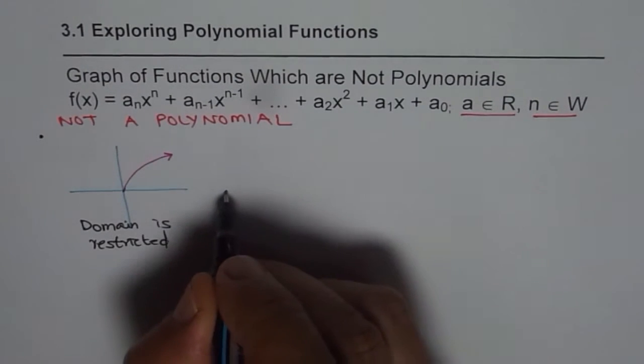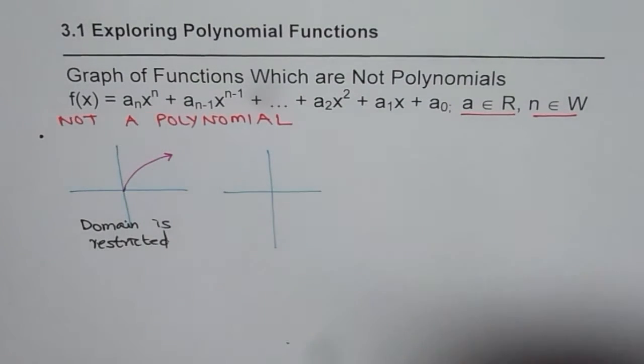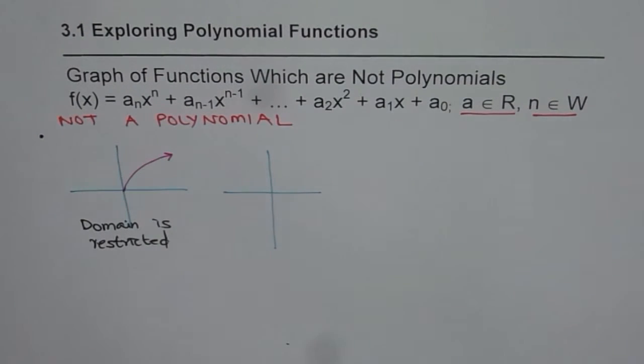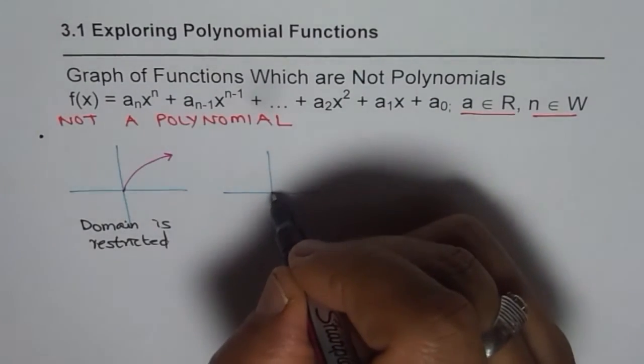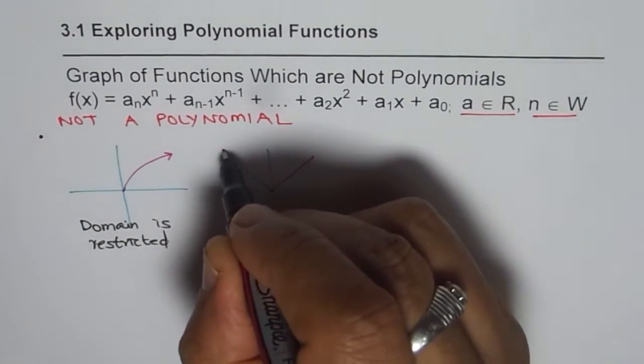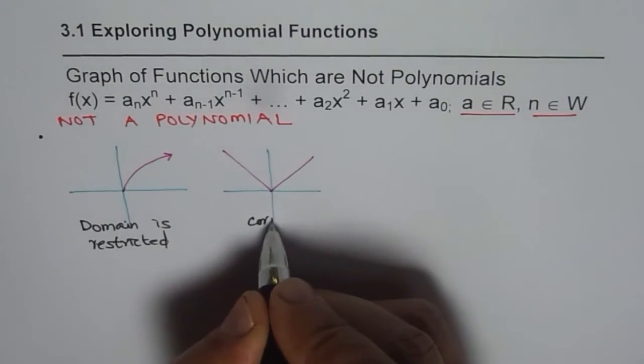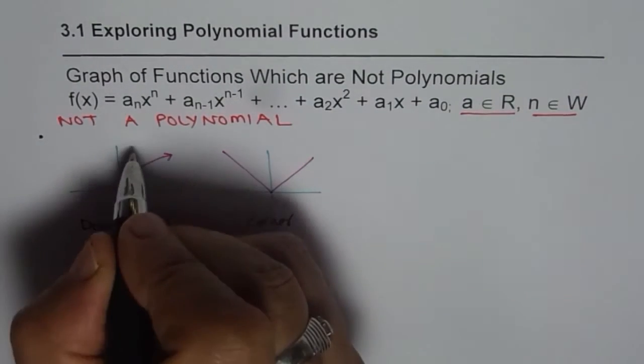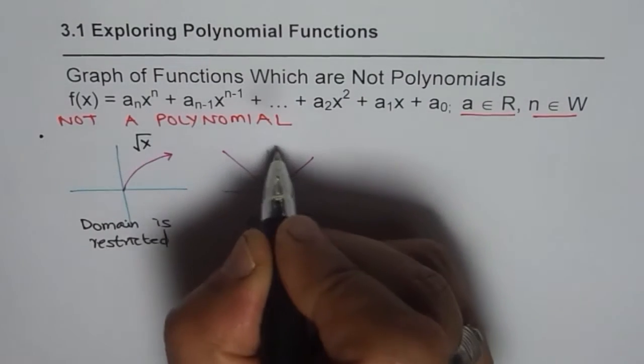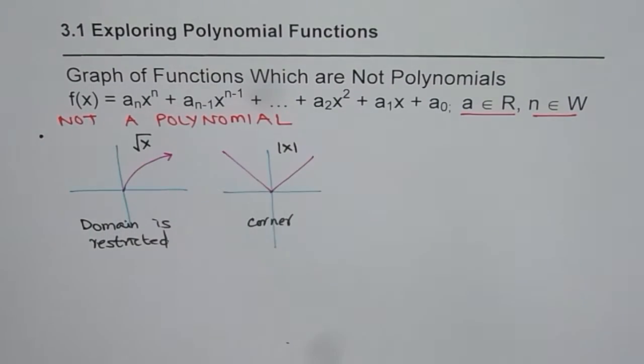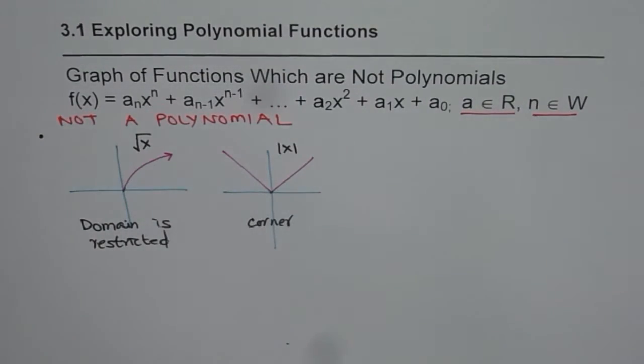Or we could have a function which has cusp or a corner. Let us say a function which is absolute x. Now this is not a polynomial since it has a corner. This one you are familiar with as absolute x.